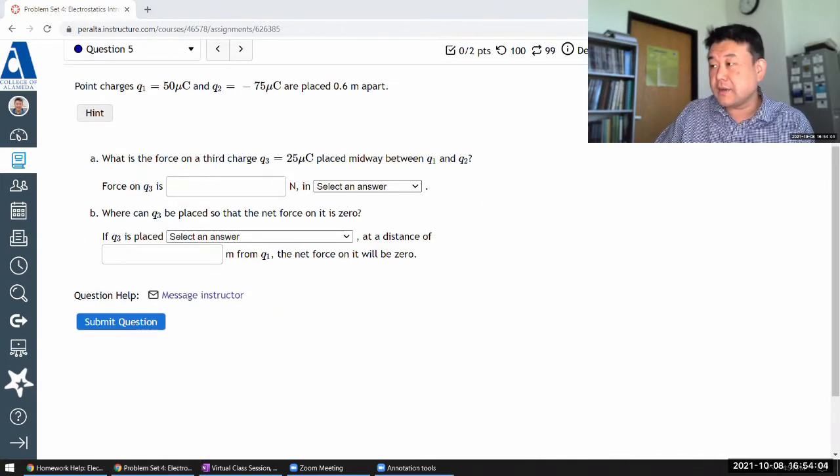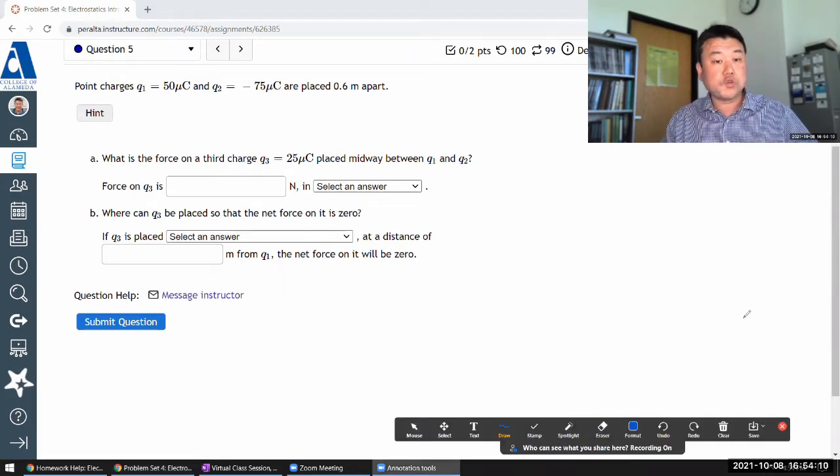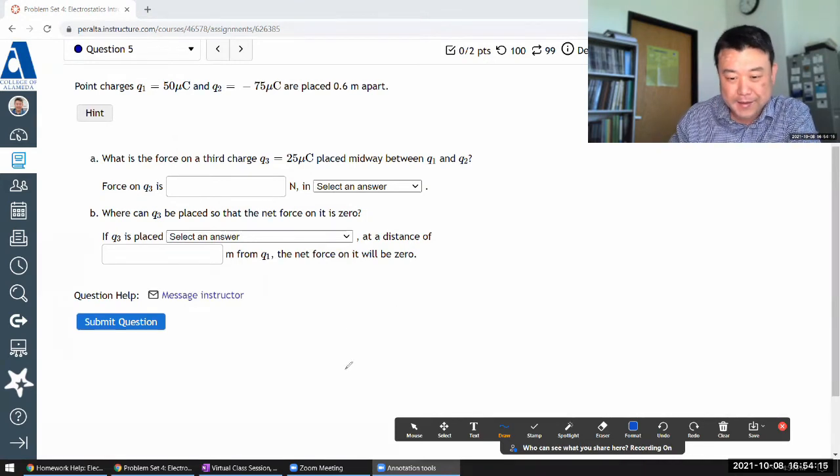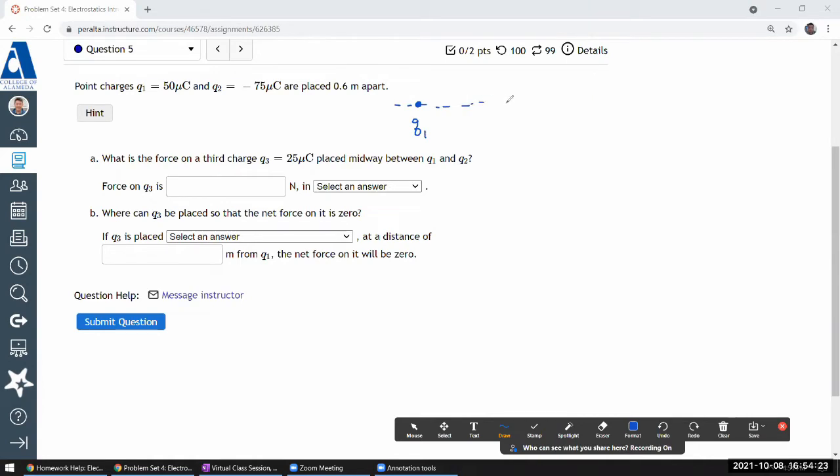It says point charges Q1 and Q2 are some distance apart. Let me draw them reasonably. So they are some distance apart horizontally. I'm just trying to make things simple.